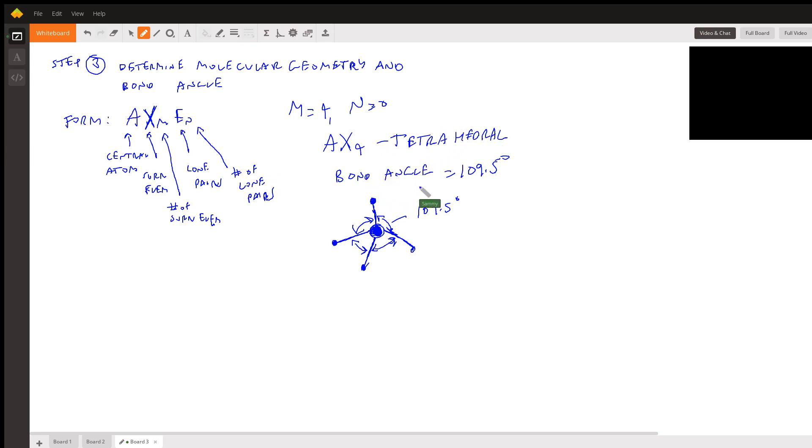And then to find the bond angle, it's going to be based on the molecular geometry. So once you know the molecular geometry, which is tetrahedral, you can actually find the bond angle. And that's going to be 109.5.